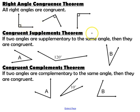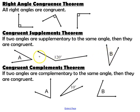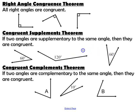The congruent supplements theorem states that if two angles are supplementary to the same angle, then they are congruent. For example, if an angle measures 120 degrees and it's supplementary to angle A and also supplementary to angle B, then angle A must equal angle B — both must be 60 degrees. Therefore, angle A and angle B are congruent.